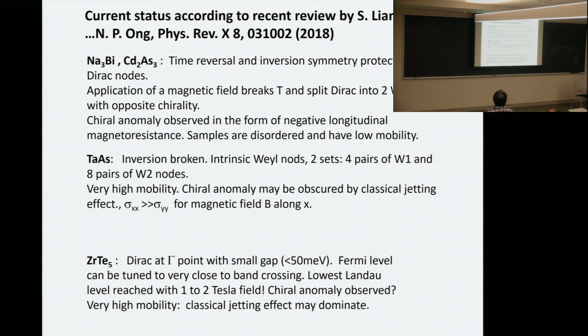The current status according to a recent review by Liang and Ong: there are two materials. In these materials, they actually have time reversal and inversion symmetry. So at zero field, there's no Weyl, but they're just a Dirac point. By applying magnetic field, you break time reversal and you separate the Weyl nodes. These samples are very disordered and have very low mobility. Another material is tantalum diarsenide TaAs. In this case, these Weyl nodes are intrinsic because inversion symmetry is broken. They are already separated at zero field. In fact, there are a lot of Weyl nodes - 12 pairs of Weyl nodes altogether.